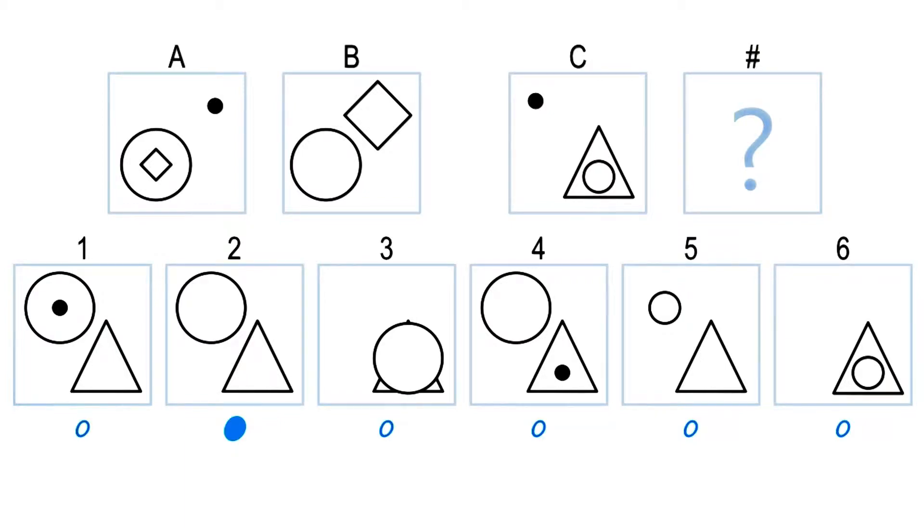What do you think is the right answer for this one, David? So I observed two things are going on between A and B. The dot in the top right is disappearing, and the diamond is moving out and growing.